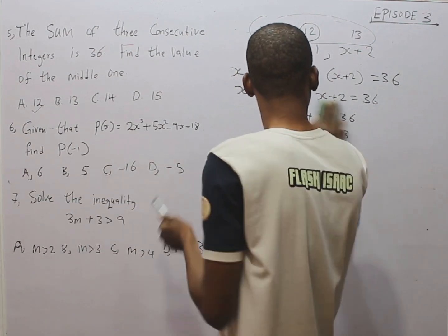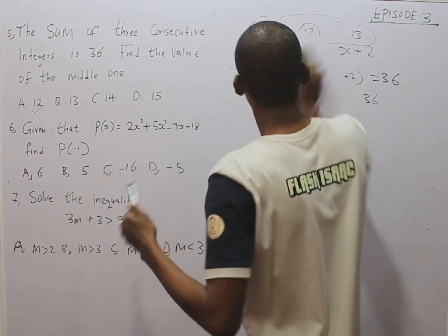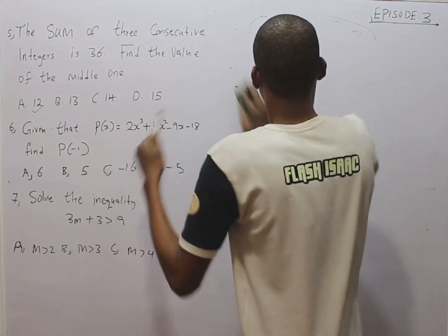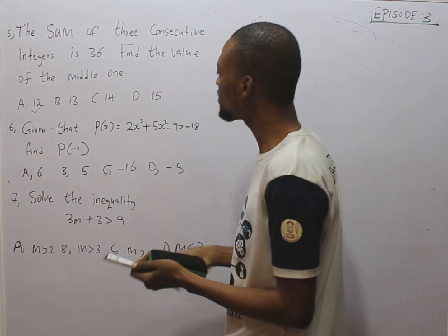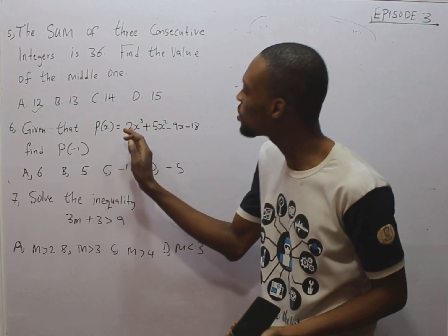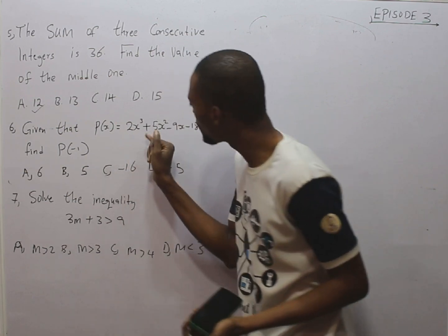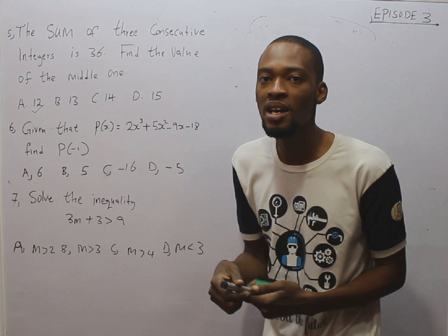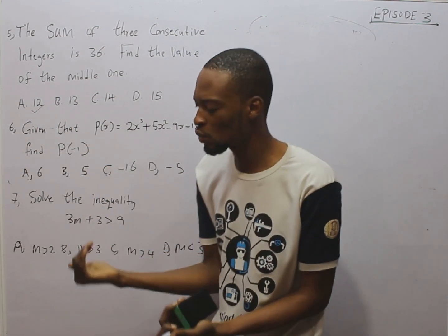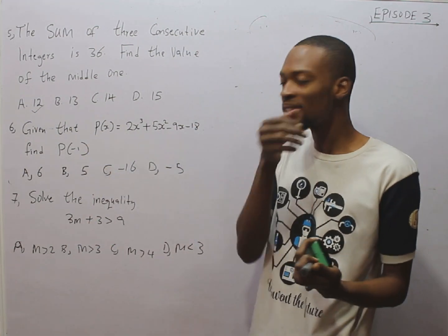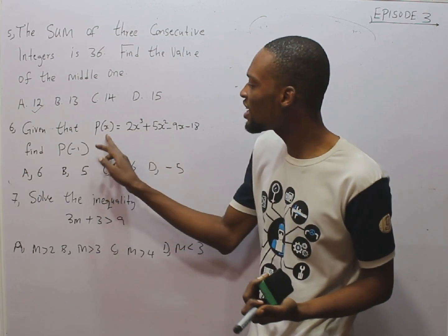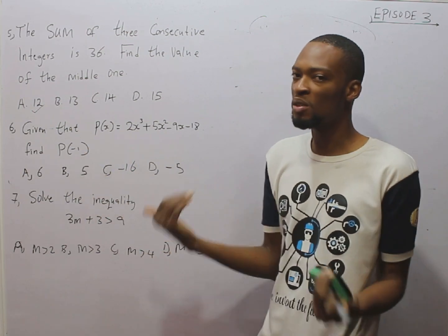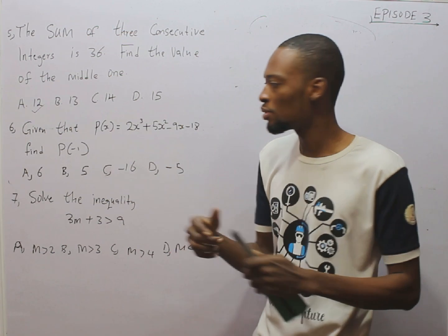Look at the second question. It says, given that P(x) is 2x raised to the power of 3 plus 5x squared minus 9x minus 18. Find P(-1). Any time you see questions like this, it simply means that anywhere you see x, replace it with minus 1. That is your job.